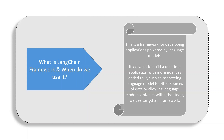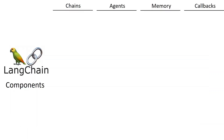There are various components in LLMChain Framework, but the main components that everyone must know are chains, agents, callbacks, and memory. Let's understand these components one by one.